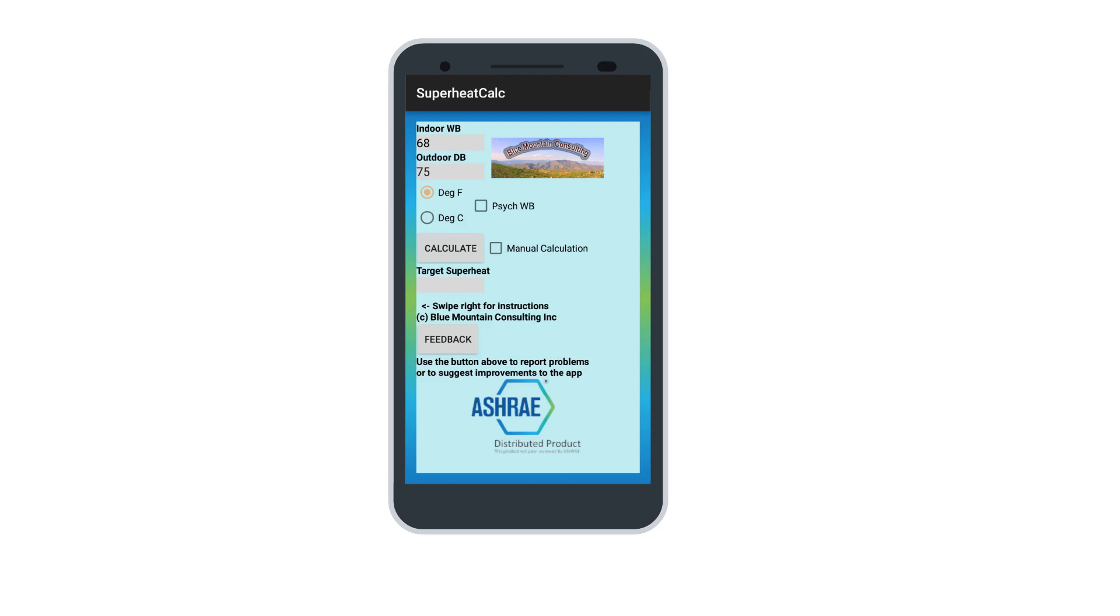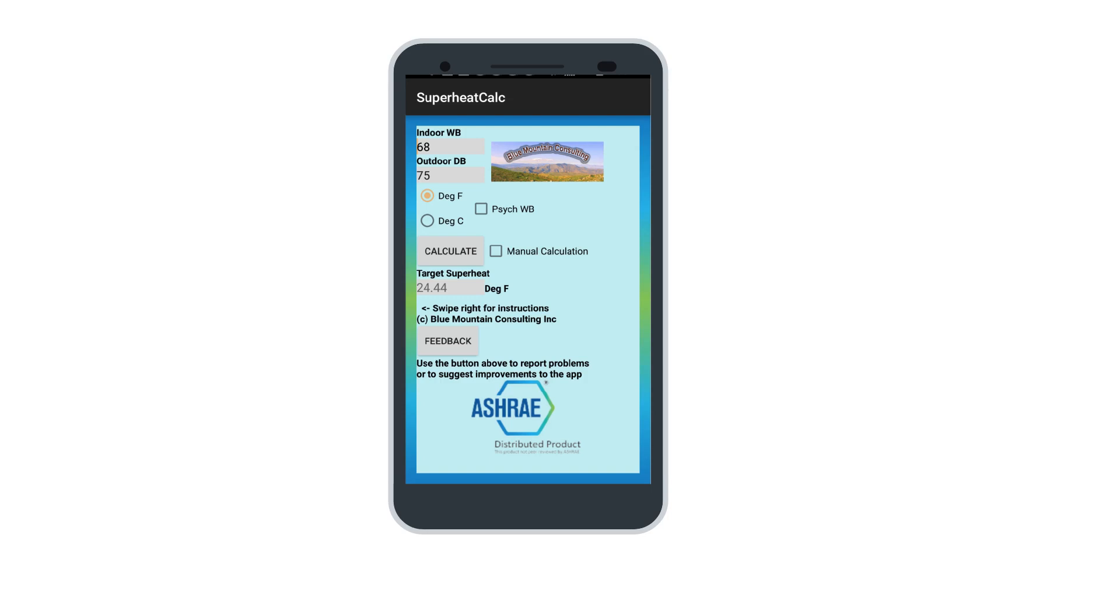Now, Superheat Calc, a mobile app developed by Blue Mountain and co-branded by ASHRAE, can help by performing many useful calculations to help with analyzing HVAC systems. Superheat Calc is organized into four pages.